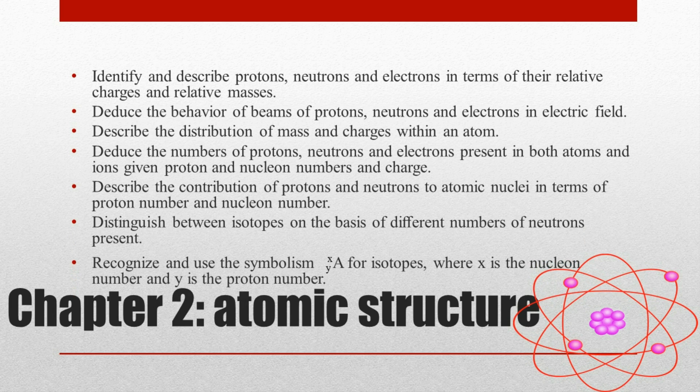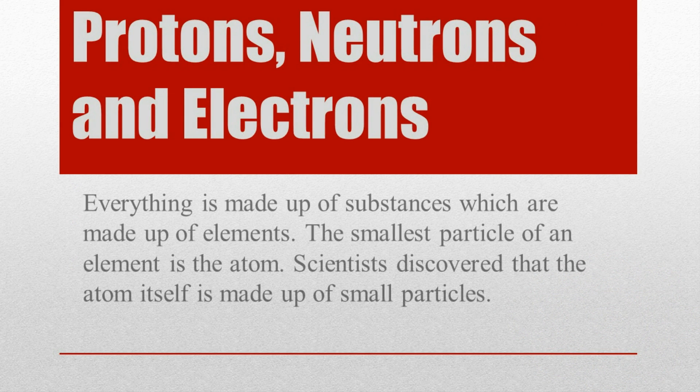recognize and use the symbolism with X as superscript and Y as subscript before element symbol A for isotopes, where X is the nucleon number and Y is the proton number. Protons, Neutrons, and Electrons: everything is made up of